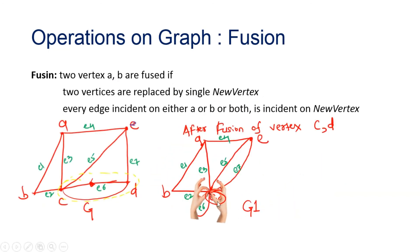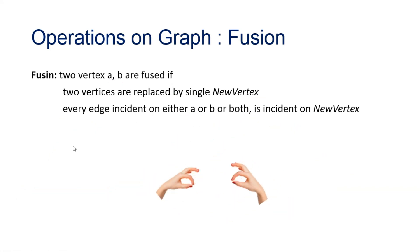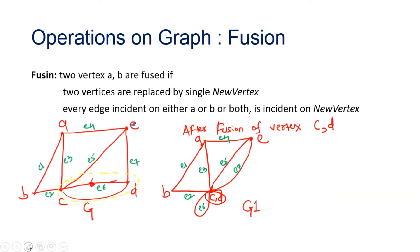After fusion, the edges incident on C and D are now incident on the new vertex CD. If there was an edge E6 between C and D themselves, since both are now merged into CD, this edge becomes a self-loop on the new vertex CD. This is the result of the fusion of the two vertices.